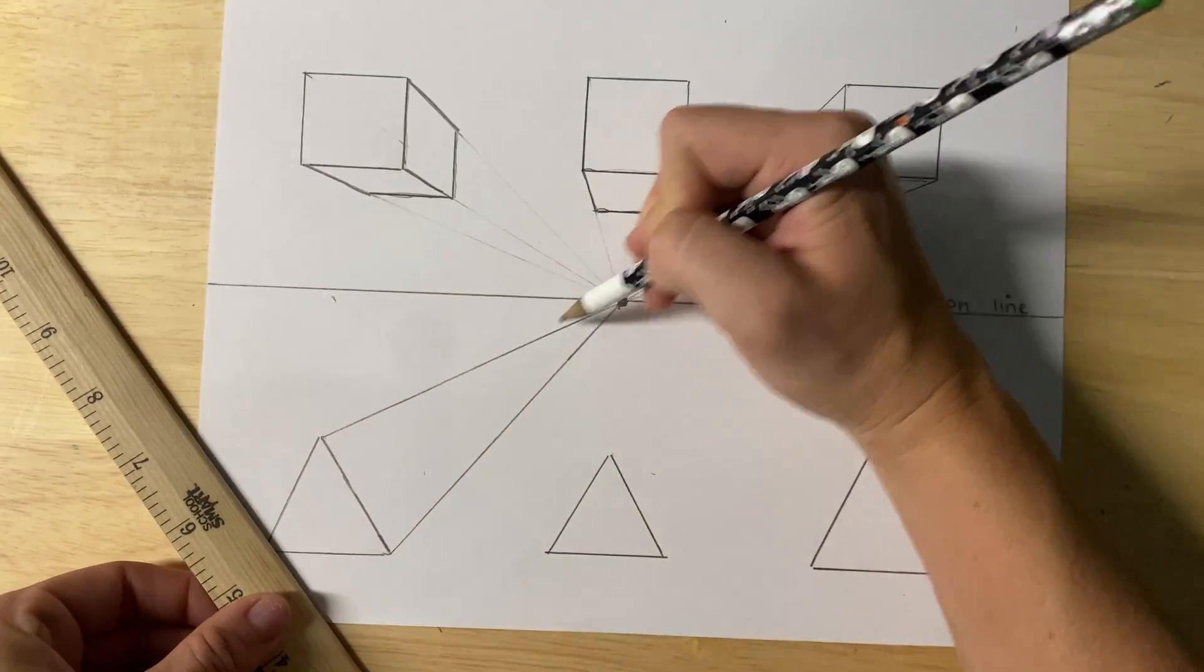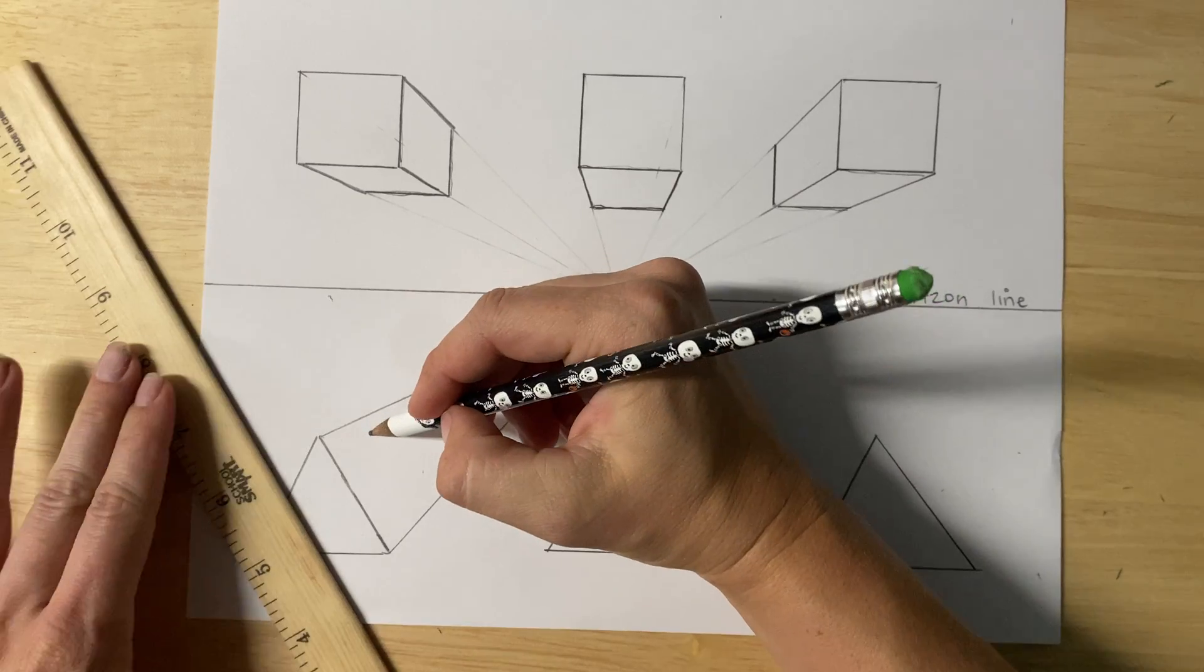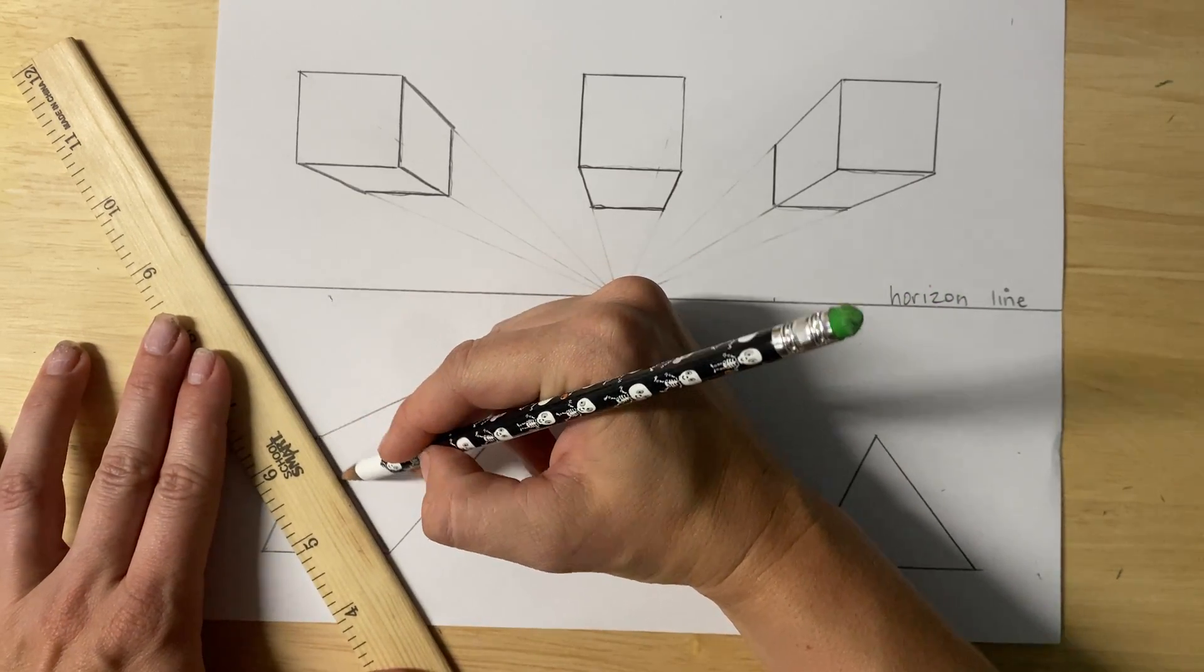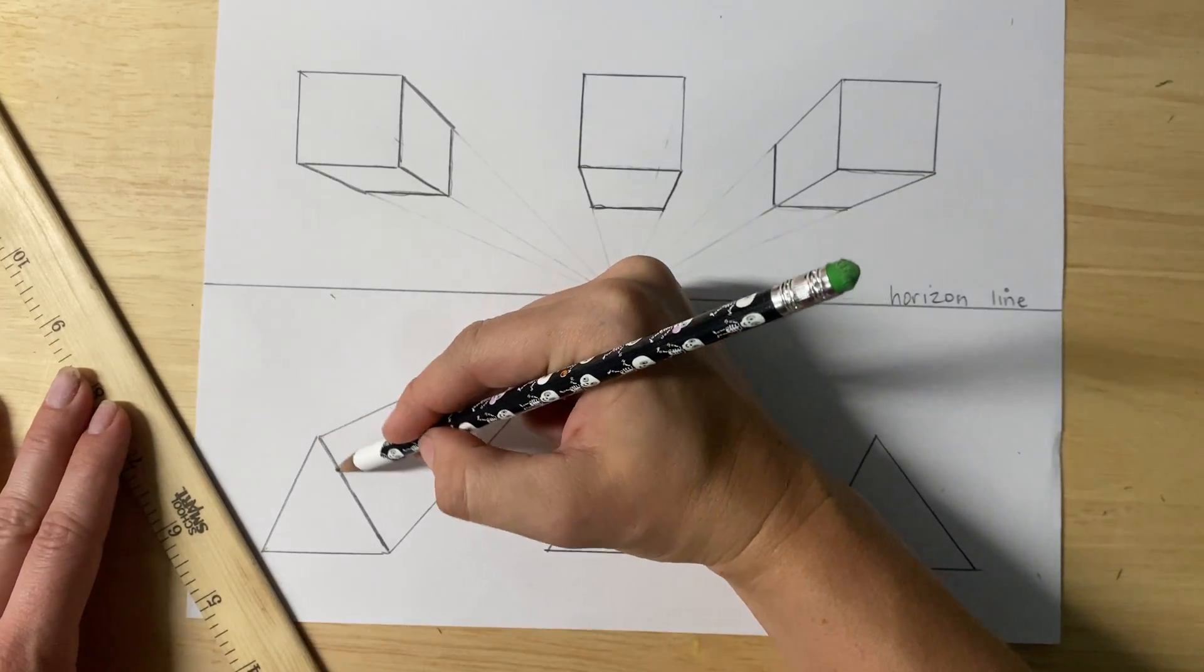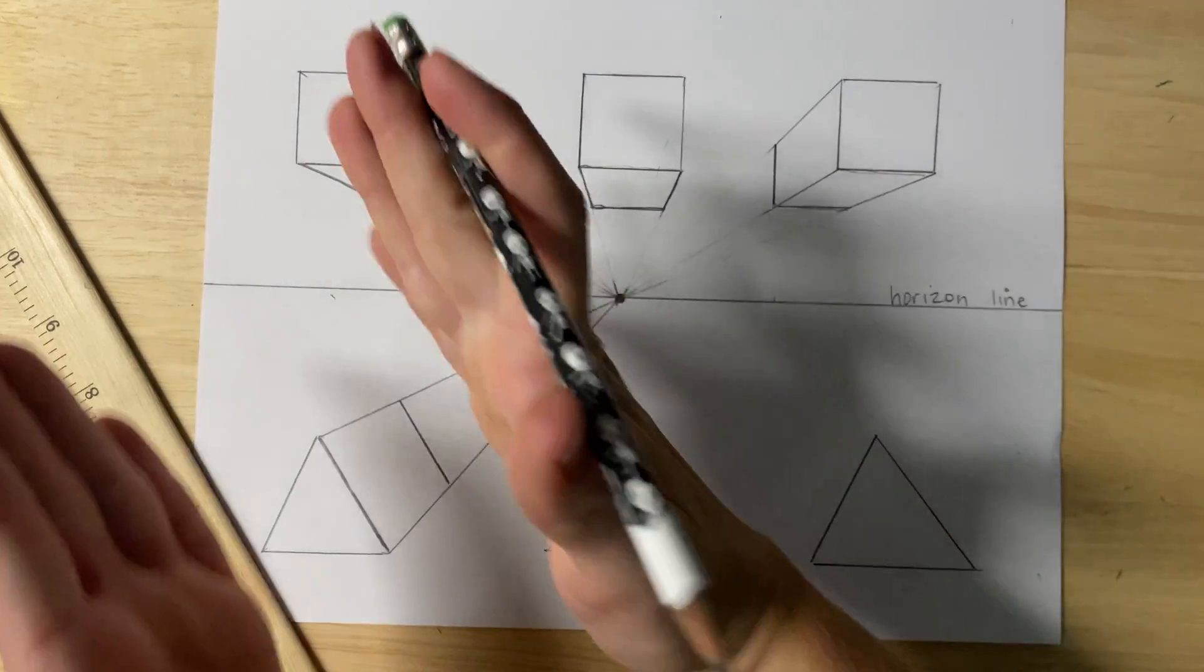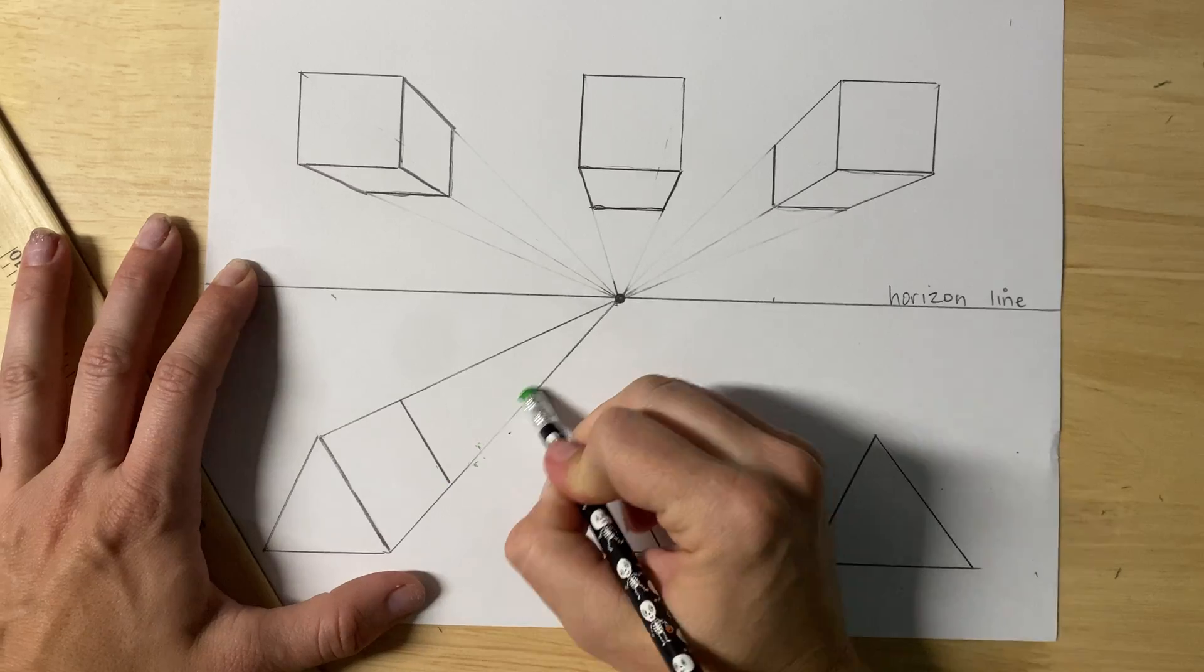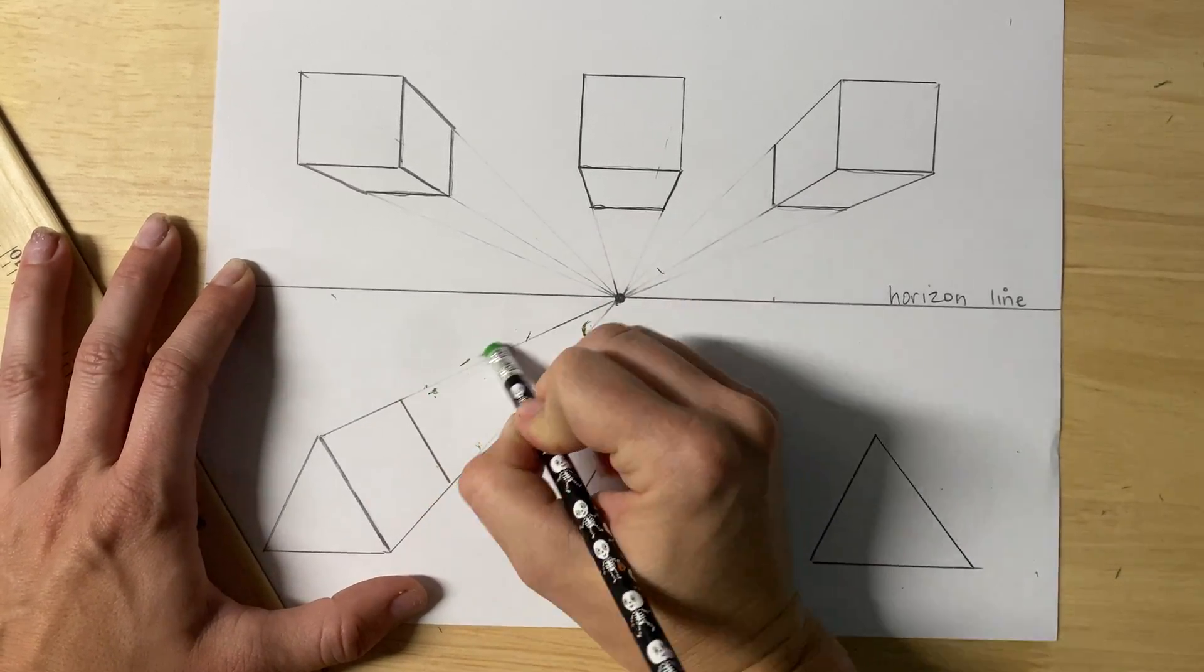Now I'm going to shorten this. It's going on and on and on forever. Same thing. We need parallel lines. Make sure that this and this match, go in the same angle. And now you can get rid of your receding lines.